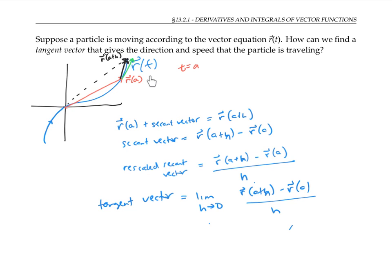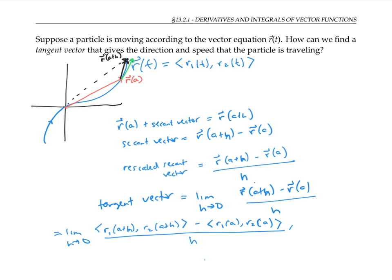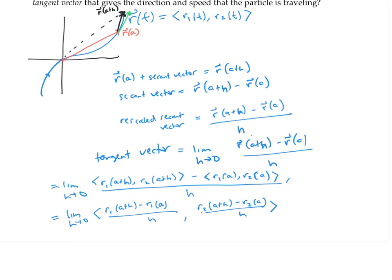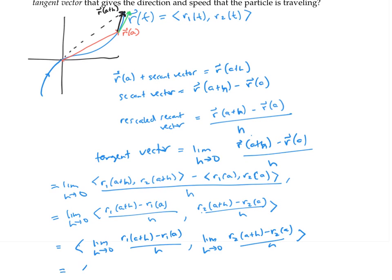Now if we write our original r of t in components, then we can write out our limit in terms of components and rewrite a little bit. Taking the limit of a vector is the same thing as taking the limit of each component separately, which just gives us our familiar calculus one derivatives for each component. Therefore, the tangent vector at t equals a can just be found by taking the derivatives of each component at t equals a separately.